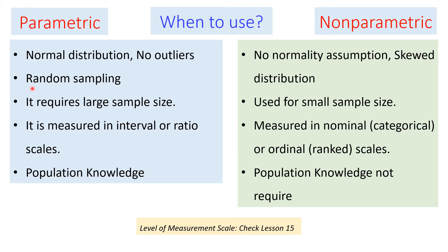Another assumption is that data should be collected using random sampling, because our objective is to infer about the population based on the sample drawn from it. Random sampling should be used in the case of parametric tests. Parametric tests also require a large sample size, whereas non-parametric tests can be used even with a small sample size.